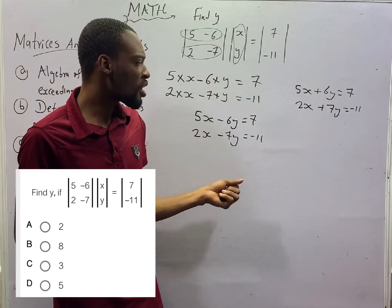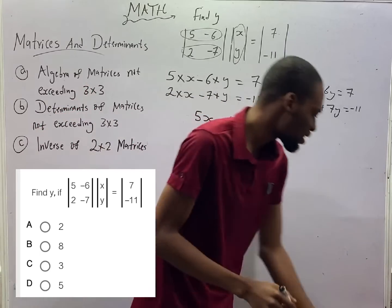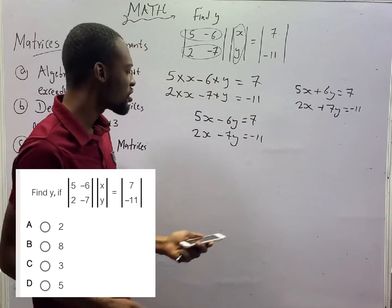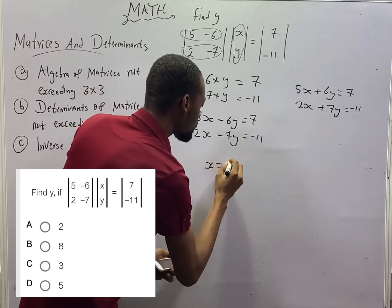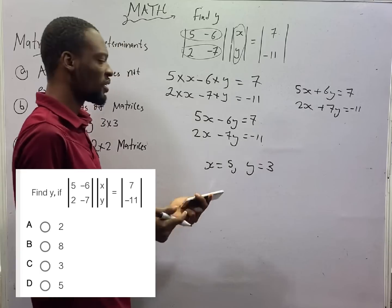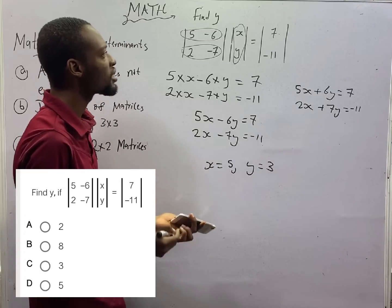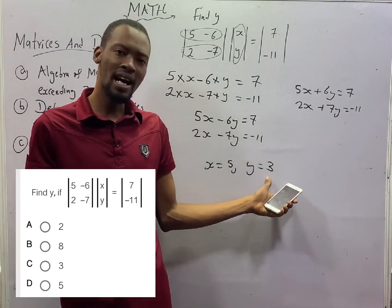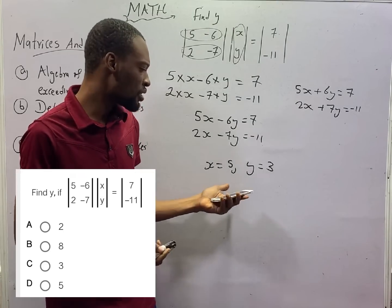From here, you solve and you get your value of S and you get your value for Y. Solving this, you will get S equals 5. We are not asked for the value of S, we are asked for the value of Y. So, it is 3. If you are asked for the value of S, it will be 5.